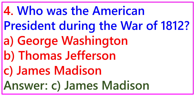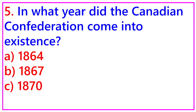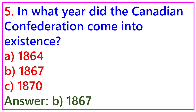Question 5: In what year did the Canadian Confederation come into existence? A. 1864, B. 1867, C. 1870. Answer: B. 1867.